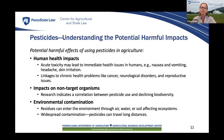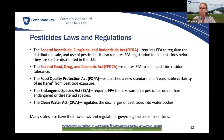Pesticide use can have negative impacts on human health and the environment, which is why laws and regulations governing pesticide use are important. In the US, pesticides are subject to regulations under two primary laws: the Federal Insecticide, Fungicide, and Rodenticide Act, also known as FIFRA, and the Federal Food, Drug, and Cosmetic Act. FIFRA requires all pesticides to be registered by the EPA before they can be sold or distributed in the United States.